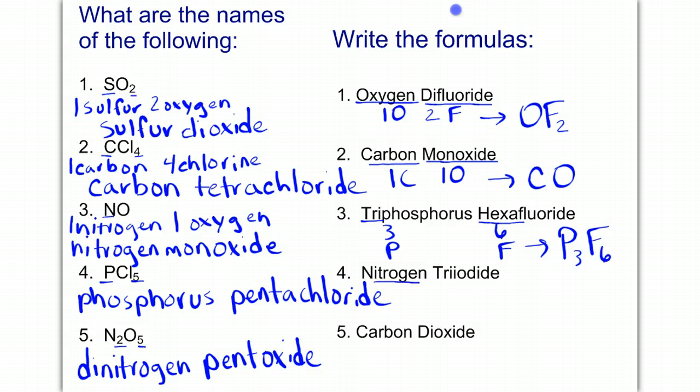In number four, we have one nitrogen, and we have three iodines. So that's going to be written NI3.